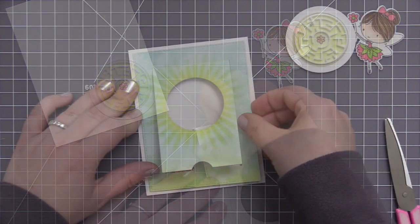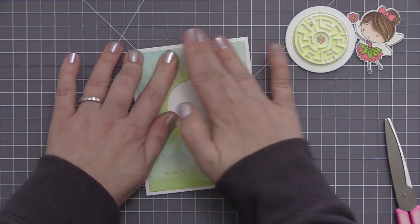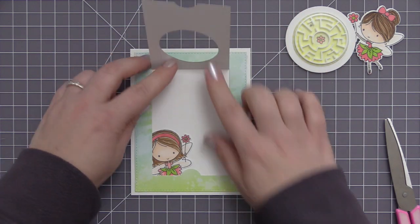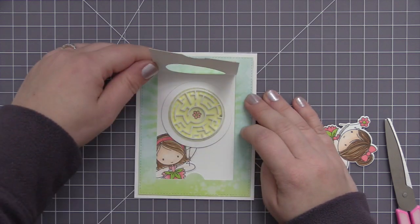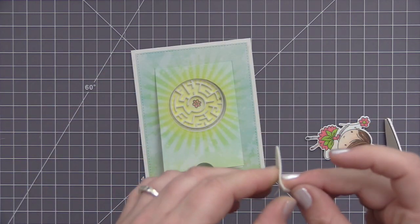Now for the little fairy image that I want for the inside of the card, I want her to kind of be tucked in behind that panel. So I adhered her right to that panel before I adhered it down, just so I was able to position her exactly where I wanted. And now I'm going to add the maze.